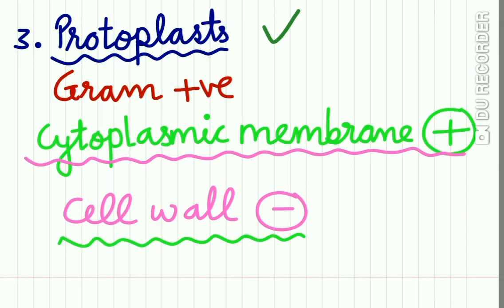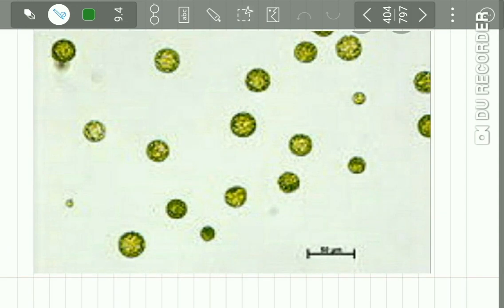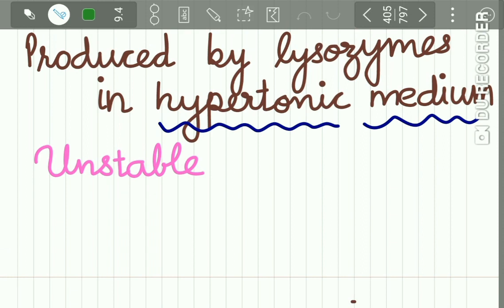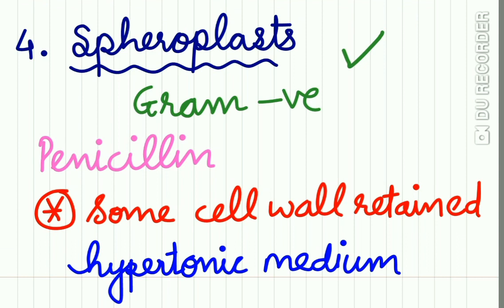Then come protoplasts. Protoplasts are derived from gram-positive bacteria and contain the cytoplasmic membrane while the cell wall is totally lacking. An example of protoplasts shown in the diagram: they are produced by placing bacteria in hypertonic medium. Protoplasts are highly unstable. Then come spheroplasts, which are formed from gram-negative organisms when exposed to penicillin. The difference between spheroplasts and protoplasts is that in spheroplasts, some amount of cell wall is retained.